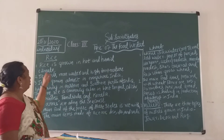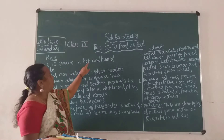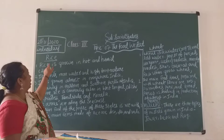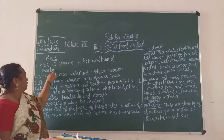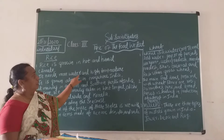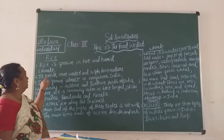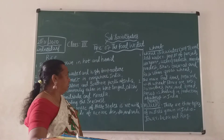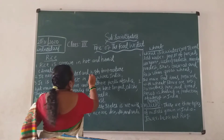Now we are going to learn about rice. Rice is grown in a hot and humid climate. Where is the rice grown, children? Rice is grown in a hot and humid climate. It needs more water and high temperature.